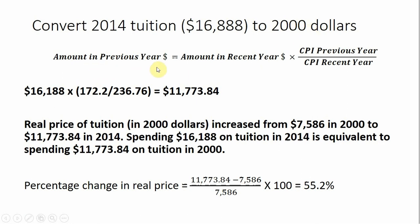Our formula gets slightly adjusted. The dollar amount in the recent year — in 2014, we plug in $16,188 — and this time we're going to have the CPI in the earlier period, the previous year, divided by the CPI in the recent or current year. So converting $16,188 into year 2000 dollars, we find a value of $11,773.84. So the real price of tuition in 2000 dollars increased from $7,586 in 2000 to $11,773.84 in 2014.